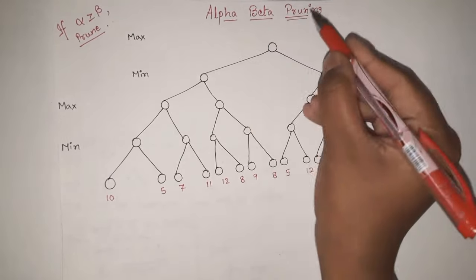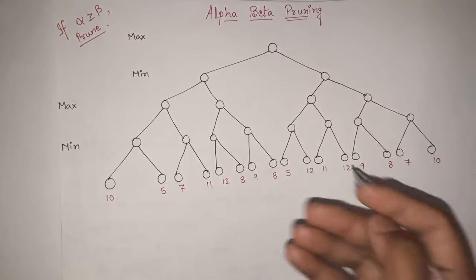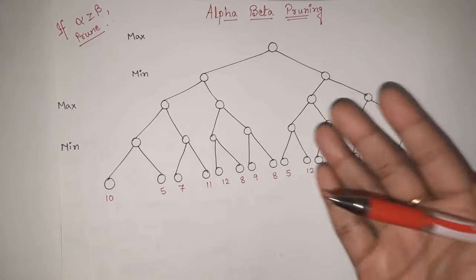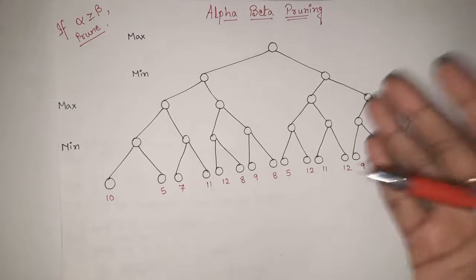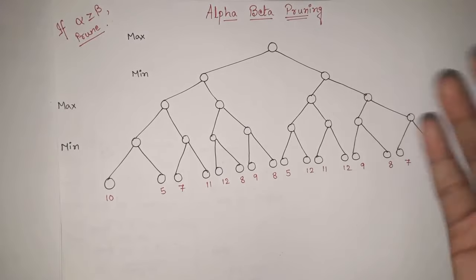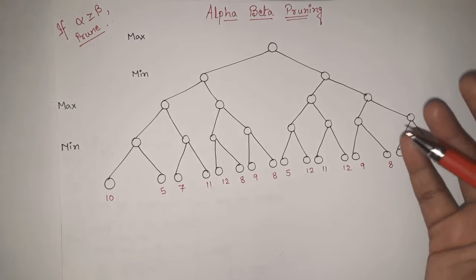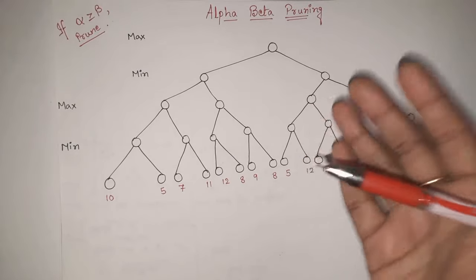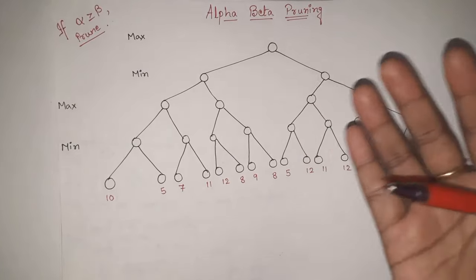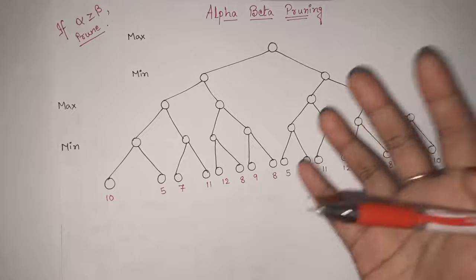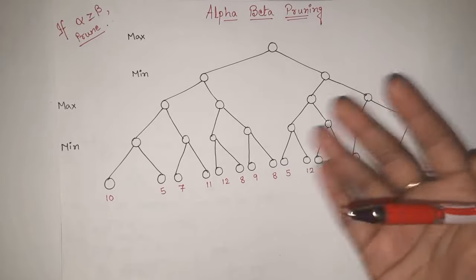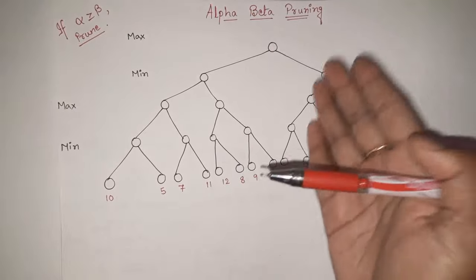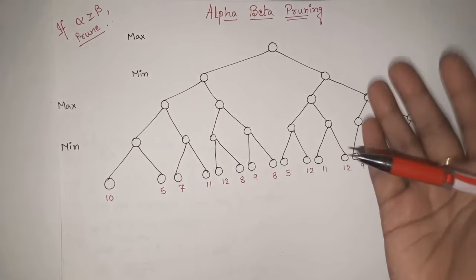What does pruning mean? Prune means to cut off. So in this, we will simply cut off the branch that is not required. With the help of an example, you will get a clear idea. There was the problem of time consuming — much more time was consumed in min-max algorithm — and so this alpha-beta pruning technique came into existence.